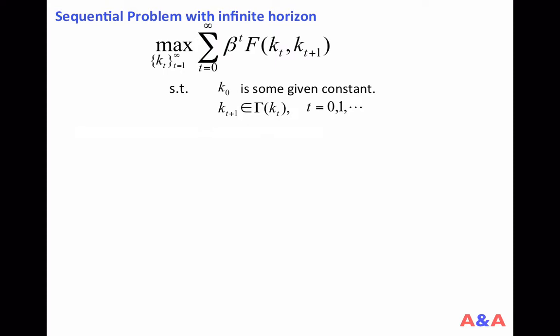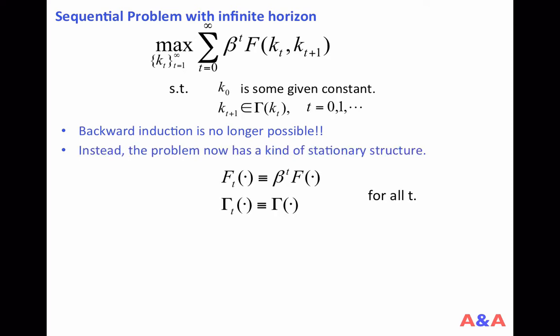Now, what if the problem has an infinite horizon? After all, many macro models have an infinite horizon. Backward induction is no longer possible because there is no terminal date you can start with. However, although the backward induction is no longer feasible, instead, the problem can now have a kind of stationary structure.